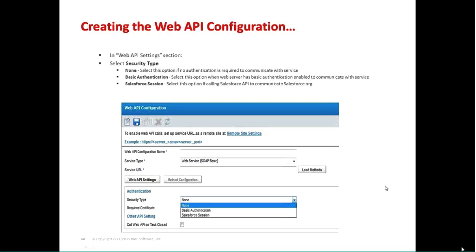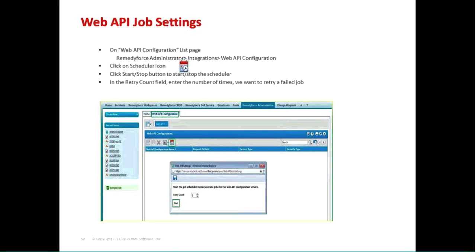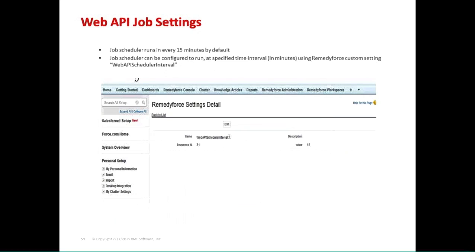You then identify, if necessary, whether you're going to have authentication — basic or more advanced, such as Salesforce certificate passing, especially if you're talking back to Salesforce itself. You can also schedule when you want these things to run. There's a scheduler to set when the task should run and how often it should repeat. If a job fails when the web service is initiated, you can configure how many times and how frequently it should retry. By default, it runs every 15 minutes until it completes.